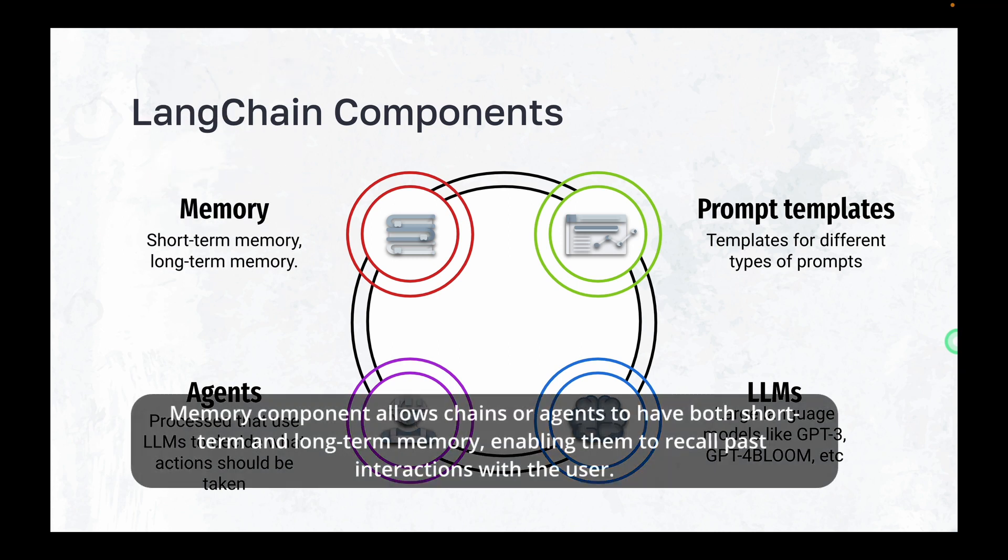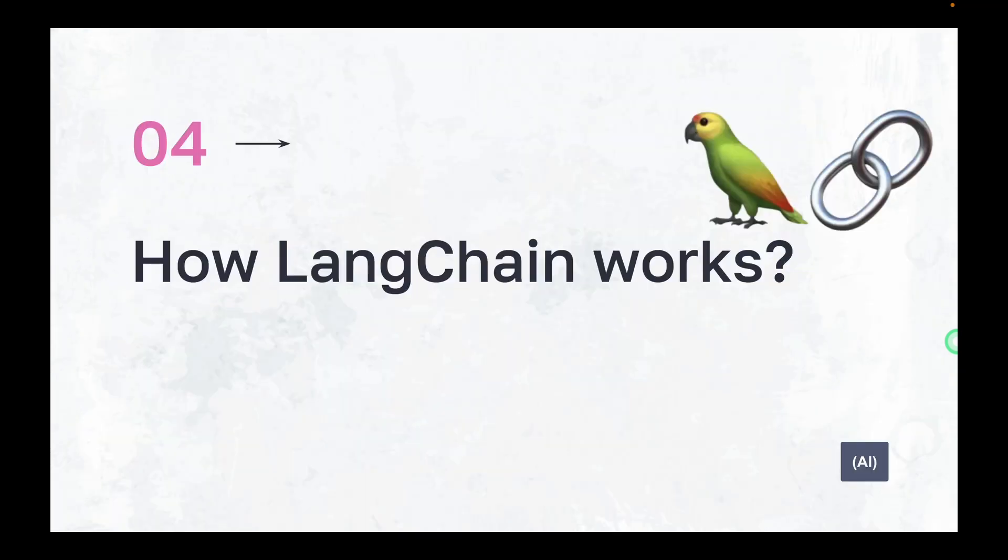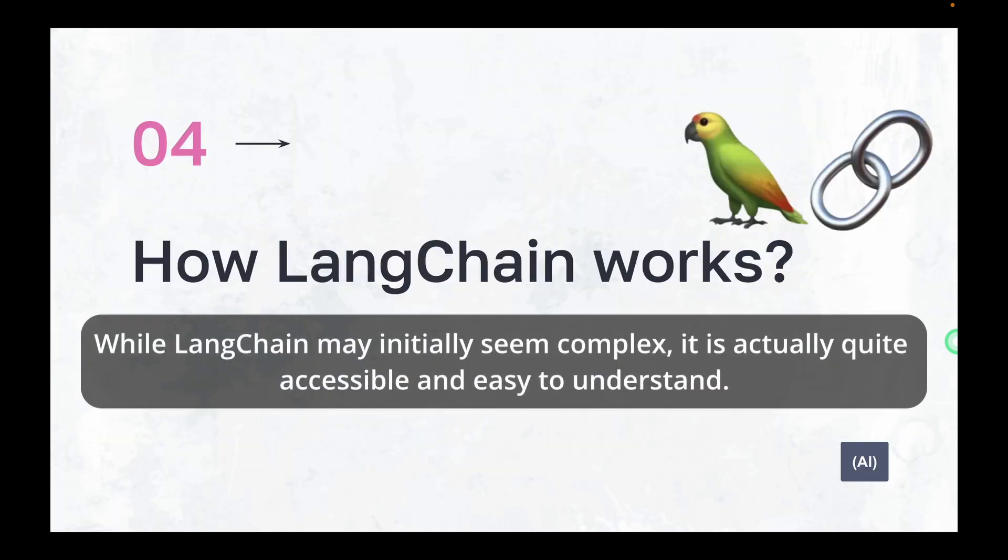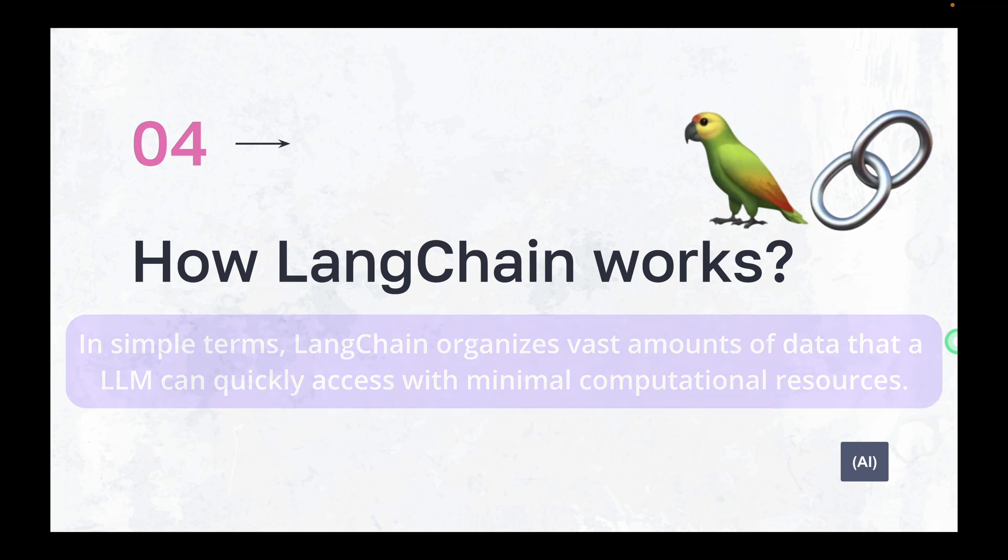The final and fourth component is memory. The memory component allows chains or agents to have both short-term as well as long-term memory, enabling them to recall past interactions with the user. While LangChain may initially seem complex, it is actually quite accessible and very easy to understand. In simple terms, LangChain organizes vast amounts of data that an LLM can quickly access with minimal computational resources.